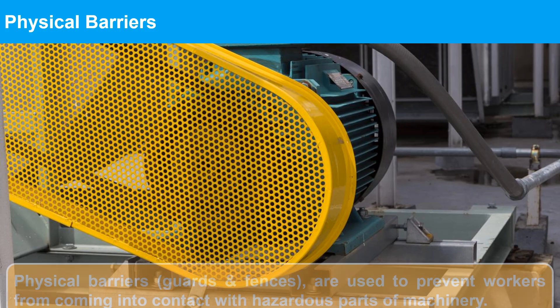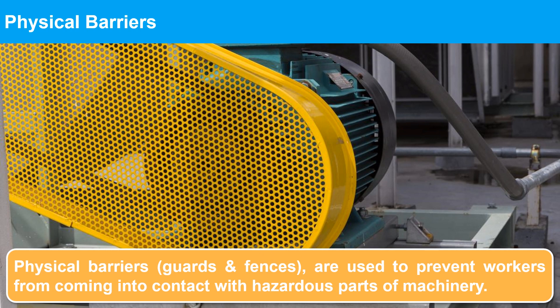Physical barriers, such as guards and fences, are used to prevent workers from coming into contact with hazardous parts of machinery. Guards can be fixed, interlocked, or adjustable, depending on the machinery's requirements.